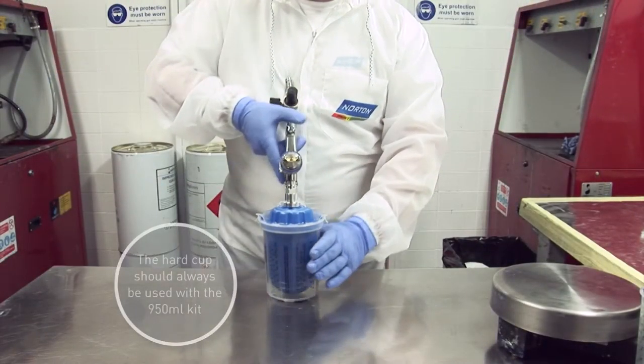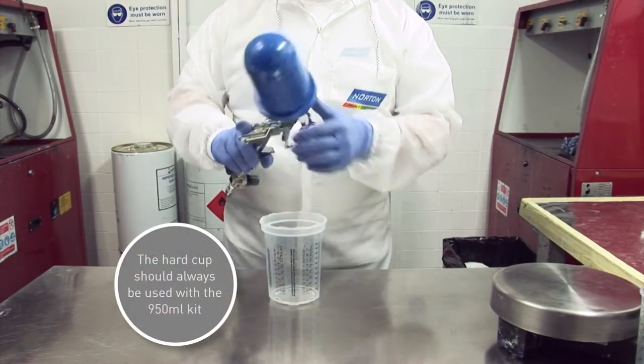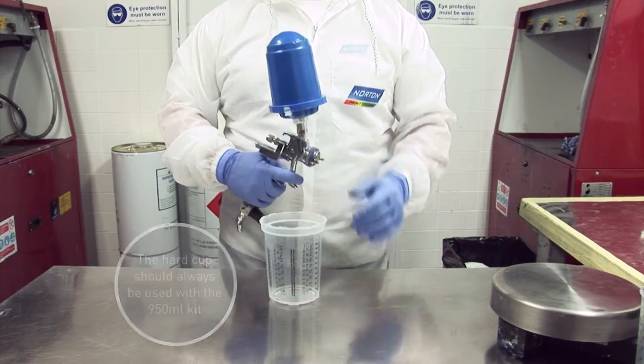Take the hard cup off by unlocking the outer clips, leaving the liner attached to the gun. This is the easiest way to spray.